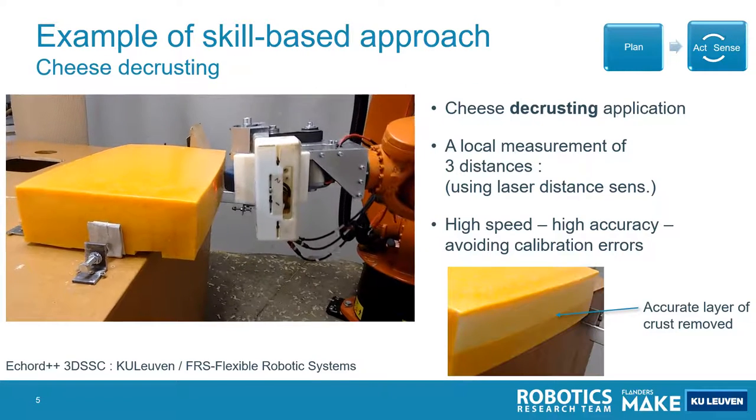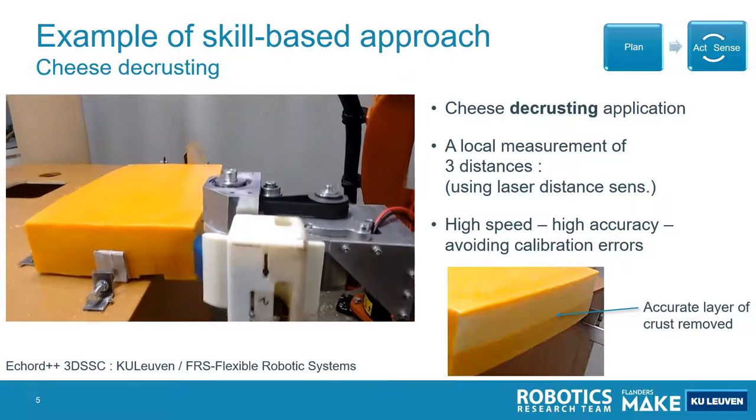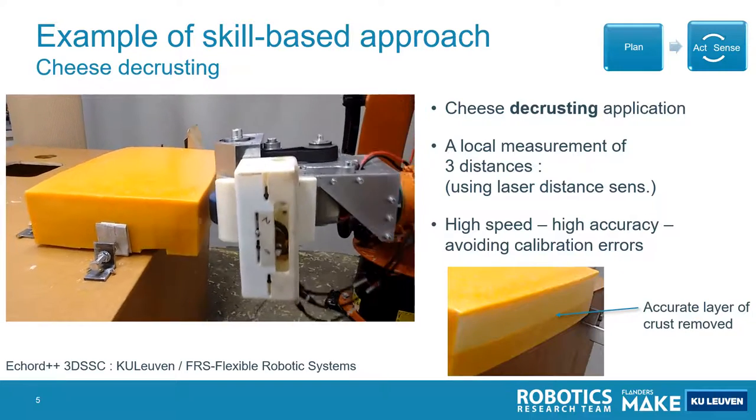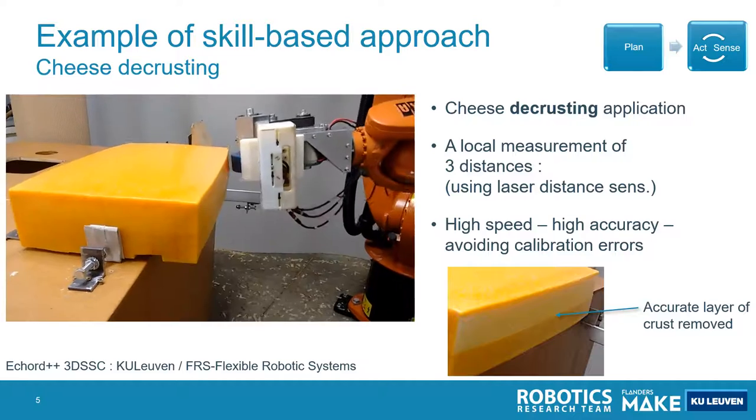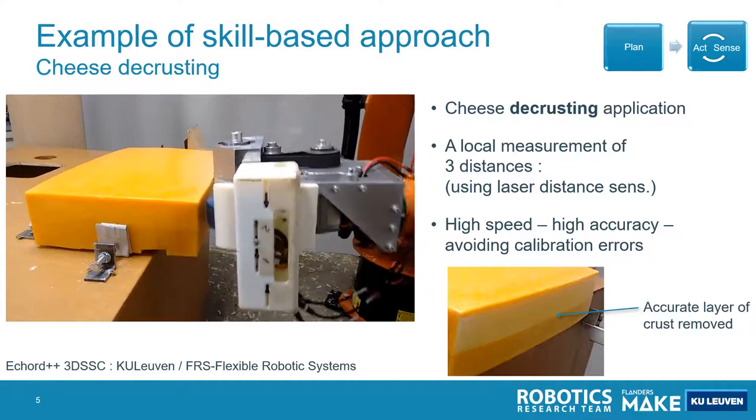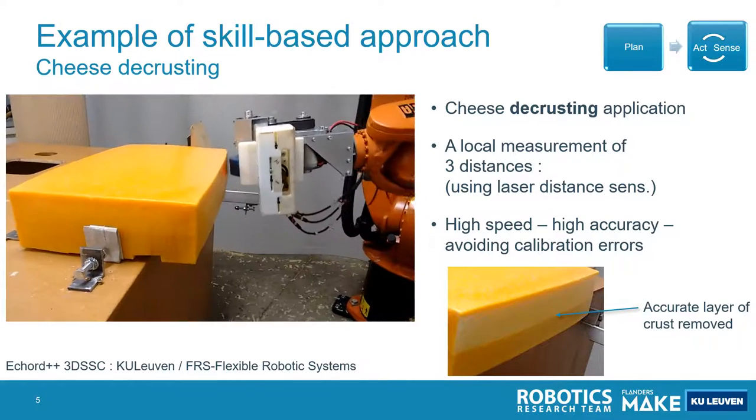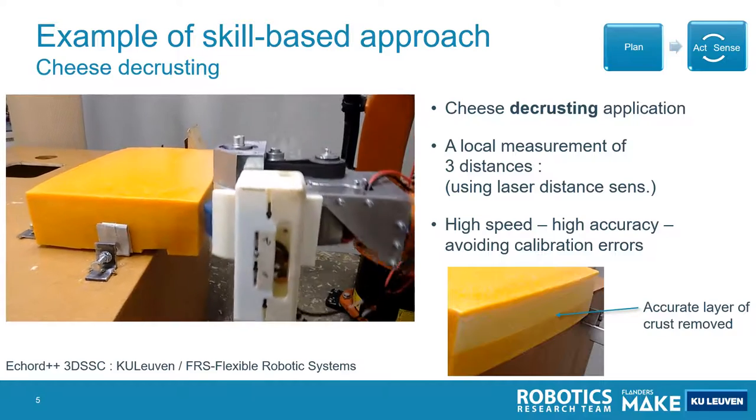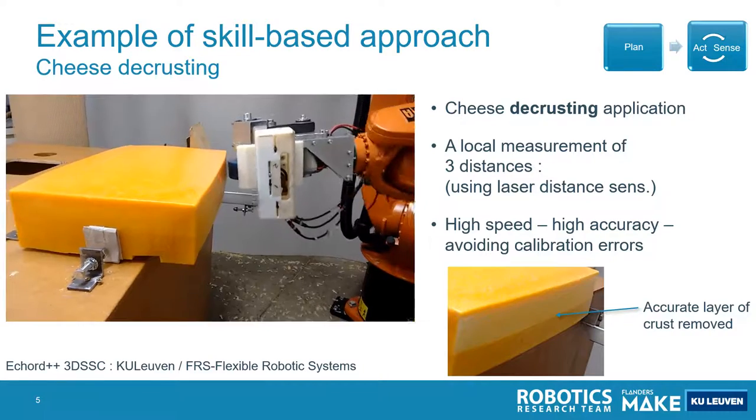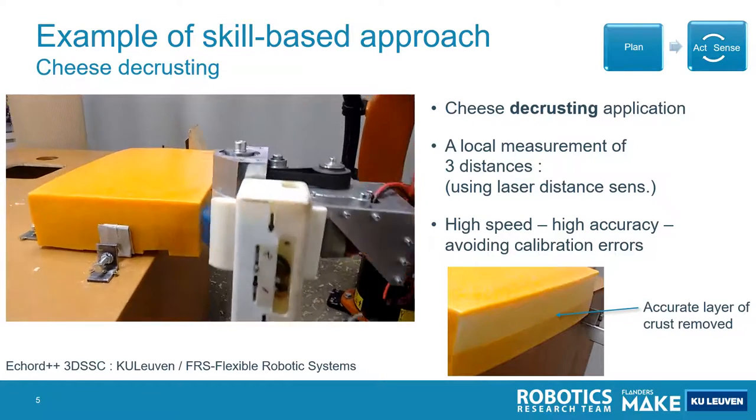Another example is a cheese decrusting application. The purpose of this application is to remove the crust from a cheese. Of course this cheese is a natural product and has an irregular shape that also varies between item by item.